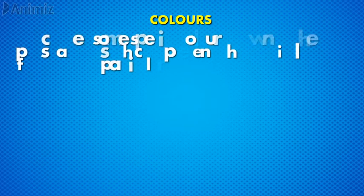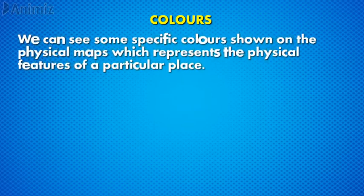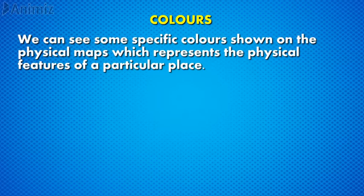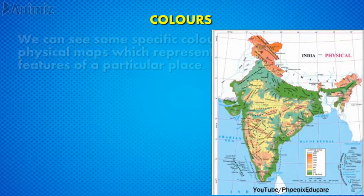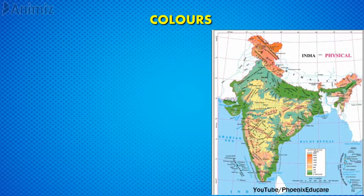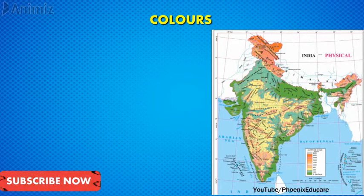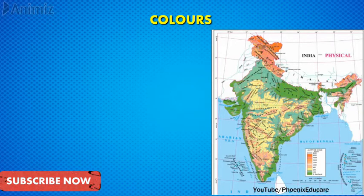Another element of the map is colors. We can see specific colors shown on physical maps which represent the physical features of a particular place. For example, in the map of India, brown color represents the Himalayas, green color represents the Great Indian Desert, yellow color represents the plateaus, reddish color represents the mountains, and blue color indicates the water bodies.